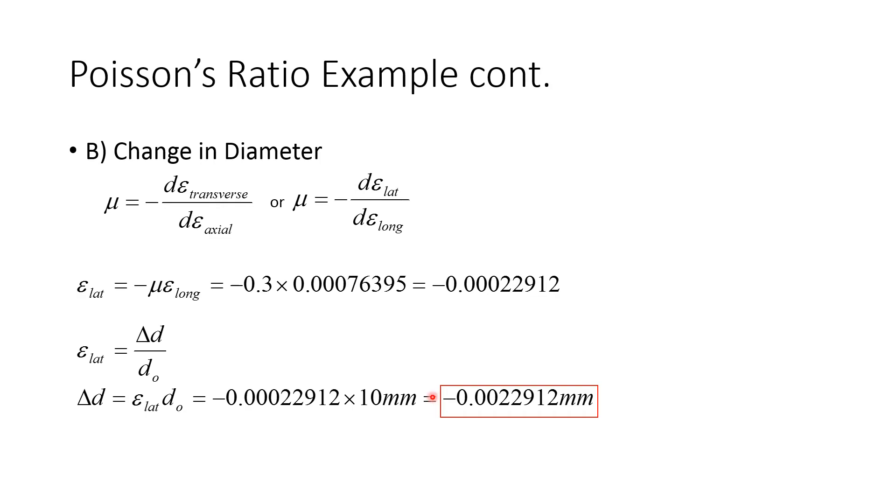Now to solve for the change in diameter, we're going to need to use Poisson's ratio. So this quite simply here is the definition of Poisson's ratio from the previous slide. I like thinking about it, lat over long, just easy for me to remember. So we're going to isolate, because we've already solved for the longitudinal strain. So what we need to do is solve for this lateral strain. We do that by multiplying this over, bringing over the negative sign, and here we have the lateral strain is equal to negative Poisson's ratio times longitudinal strain. So we have negative 0.3 times .00076395, which gives us negative .00022912. Notice there's still no units here. Poisson's ratio and strain both have no units.